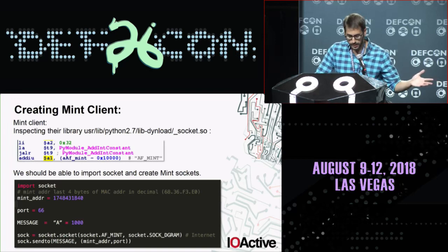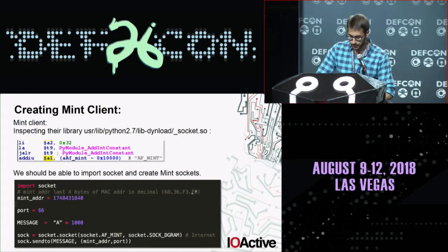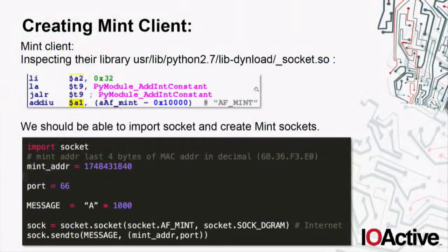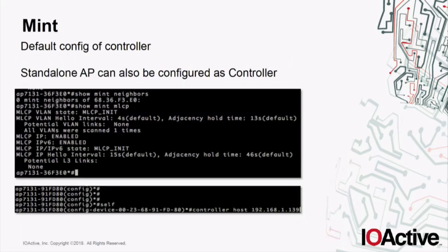In the OS there's a modified Python interpreter with their own libraries including a socket library. This allows us to create AF_MINT sockets through Python. They have compiled Python files in the OS, and by reverse engineering those I saw how to create my own Python client to communicate through MINT. Basically, here's the MINT address in decimal — the four last bytes of the MAC address of the target — then the port, the buffer, and then you create the AF_MINT socket and send through MINT to the target. One important thing: MINT is enabled by default even on standalone access points, because you can set them as virtual controllers.